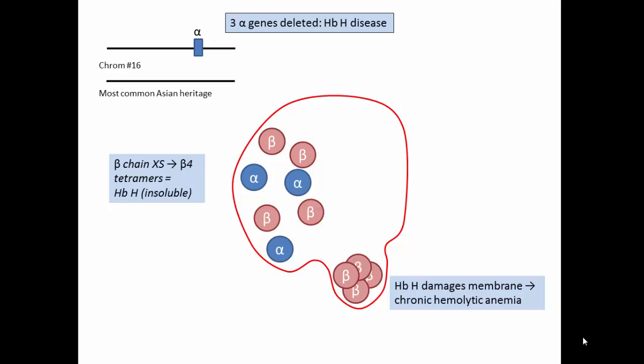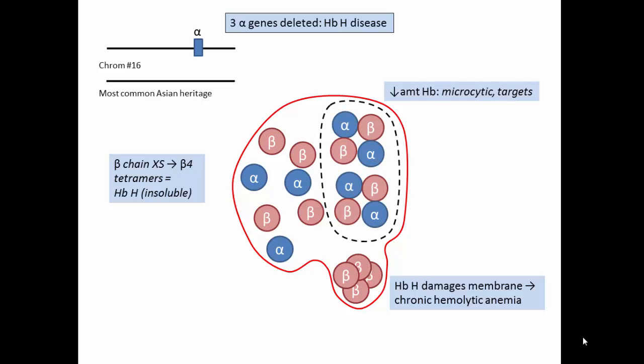Instead, predominantly, hemoglobin H damages the membrane of cells in the circulation, resulting in a chronic hemolytic anemia. Less hemoglobin is formed and the cells are microcytic and targeted.